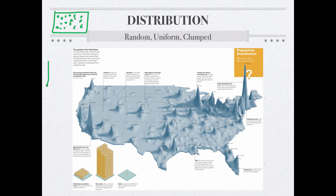There is also a uniform distribution, in which all animals live just about the same distance from one another. This sort of distribution is seen in animals that are territorial — each individual will defend the territory around it, and by defending their territories, there is an even distribution of them across the area.